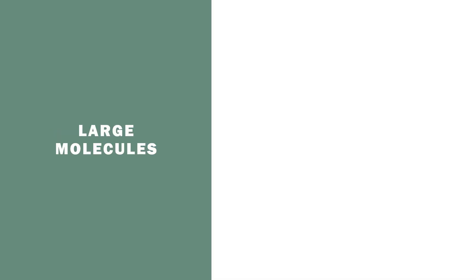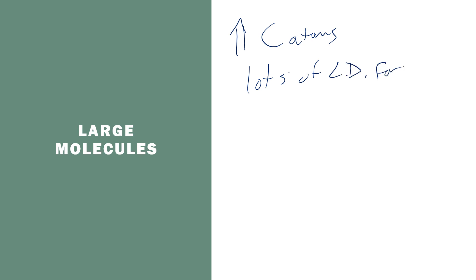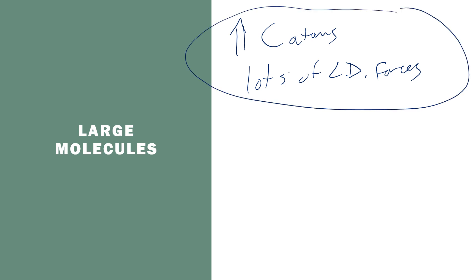I want to take a minute to mention really large biomolecules — things like DNA, proteins, and lipids. If you have a really large molecule with a lot of carbon atoms, you're going to see lots of London dispersion forces. The larger it is, the more polarizable it is because there's more electrons, so the stronger those London dispersion forces. You should also be on the lookout for OH groups — that's directly bound, so it can form hydrogen bonds. For example, the two strands of a DNA molecule are held together by hydrogen bonds between the nitrogenous bases. So for large biomolecules, look for London dispersion forces and hydrogen bonding.